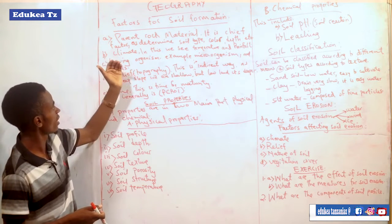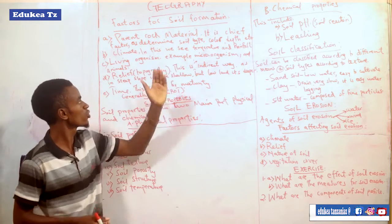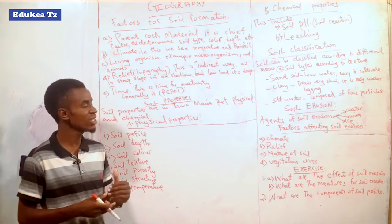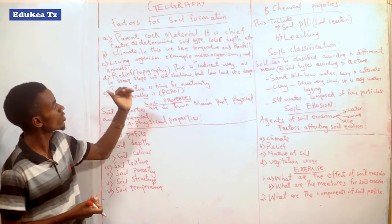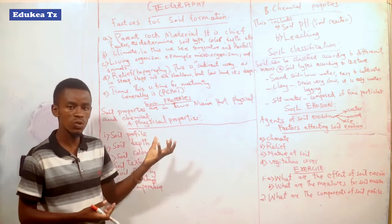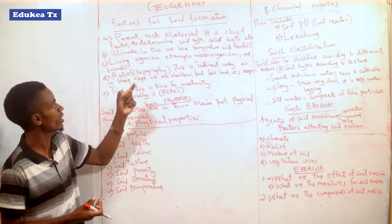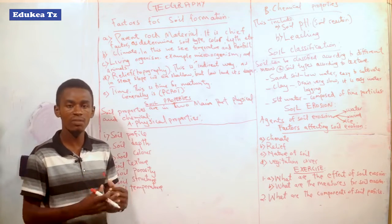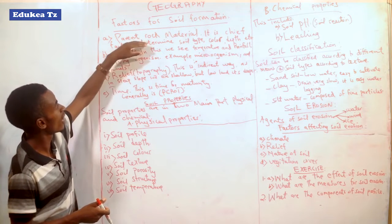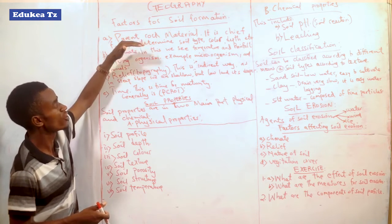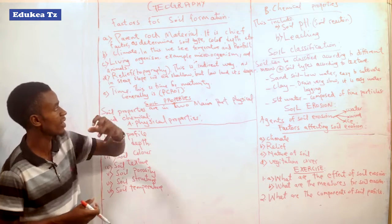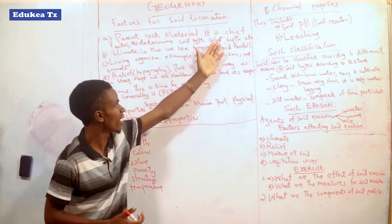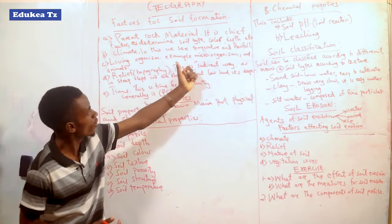The first factor is parent rock material. When we talk about the parent rock material, it means those materials which are essential for the soil to be formed and those rocks which hold the whole soil. The soil to be formed depends on the parent rock. When we talk about parent rocks, it means the mother rocks — the most important factor for soil formation. For example, the soil type is determined by the parent rock, the soil cover is determined by the parent rock, and also the soil density.